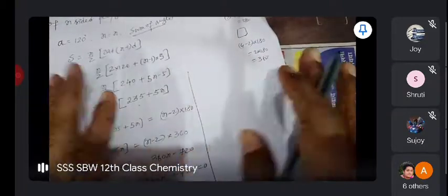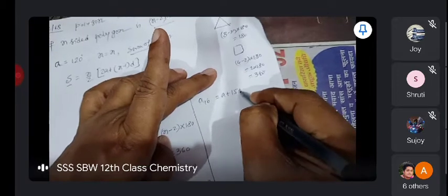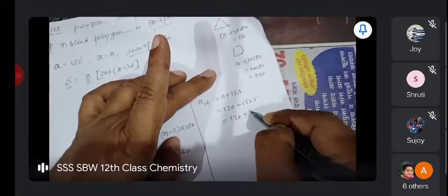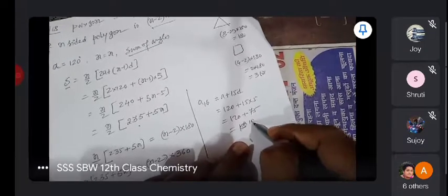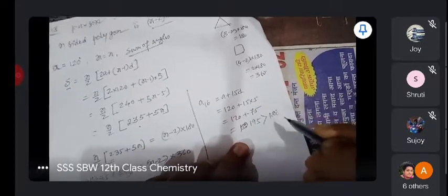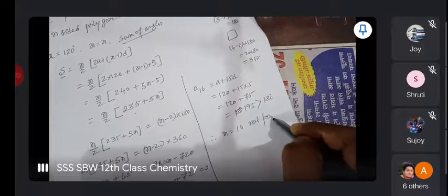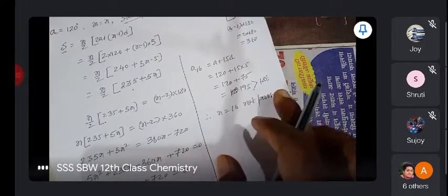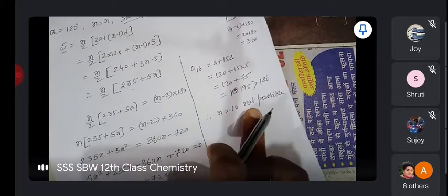Now interior angles are always less than 180. When n equals 16, a16 equals a plus 15d. a is 120, 15 into 5 is 75, so 120 plus 75 is 195, which is greater than 180. Therefore n equals 16 is not possible, because 195 degrees, but interior angles are always less than 180.